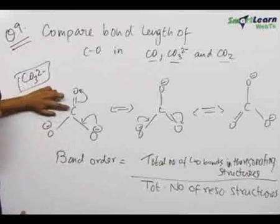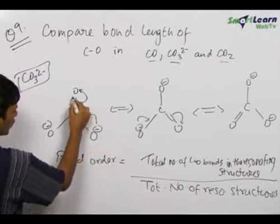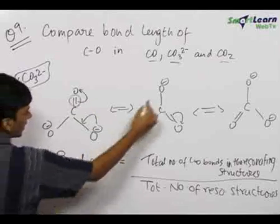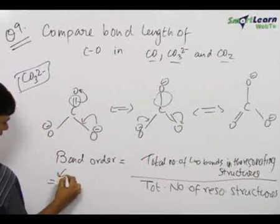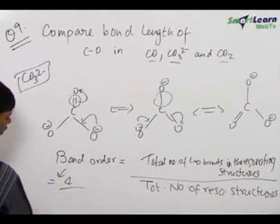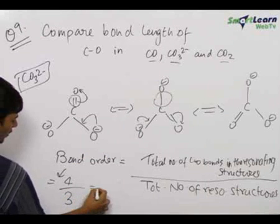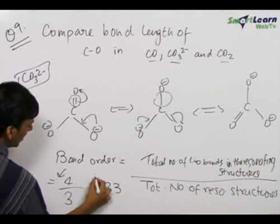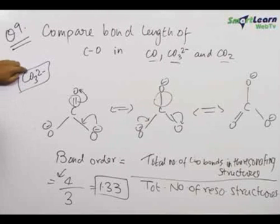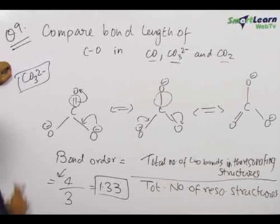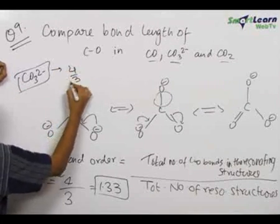Now let us check this carbon and this oxygen. The total number of bonds is 2 plus 1 plus 1, equal to 4, upon the total number of resonating structures which is 3. Therefore this comes out to be equal to 1.33. So the bond order of the carbon-oxygen bond in CO₃²⁻ is equal to 4/3.